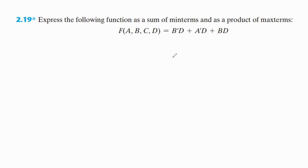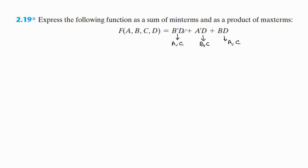In this video we will discuss the given problem: express the following function as a sum of minterms and as a product of maxterms. The given Boolean function is f(a,b,c,d) = b'd + a'd + bd. To find the sum of minterms and product of maxterms, we should find the missing variables in each product term. In the first term the missing variables are a and c; in the second term they are b and c; in the third term they are a and c.